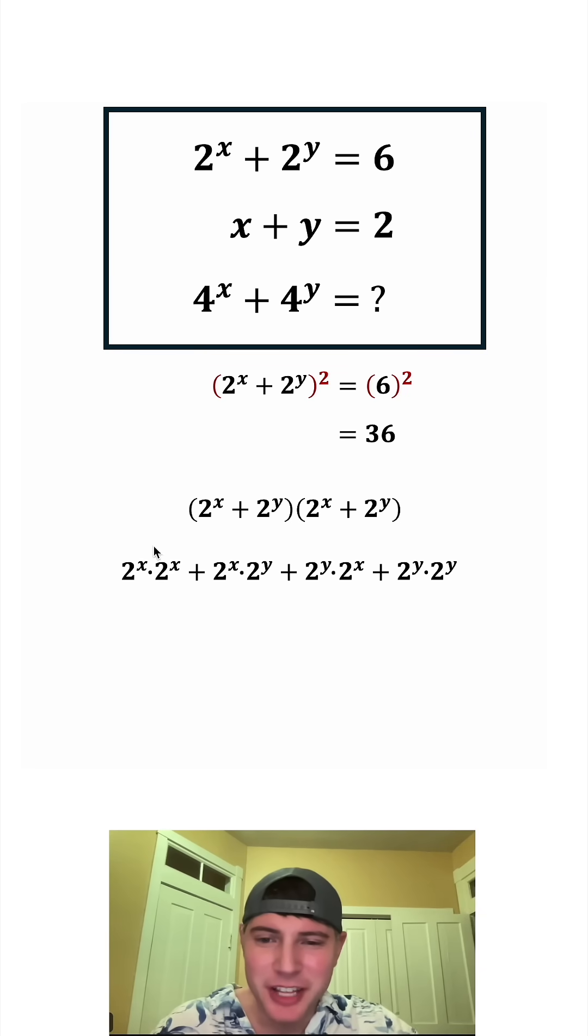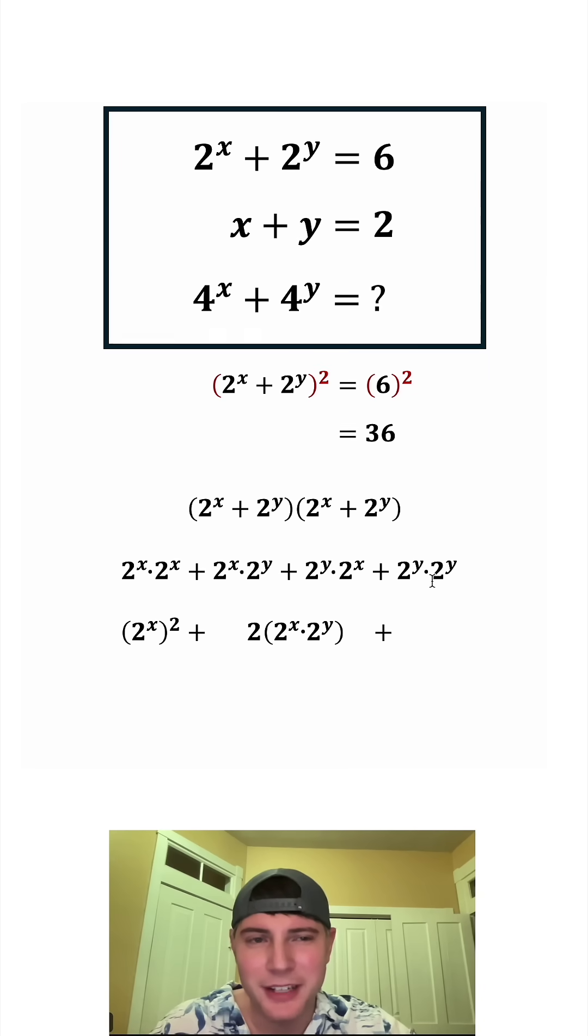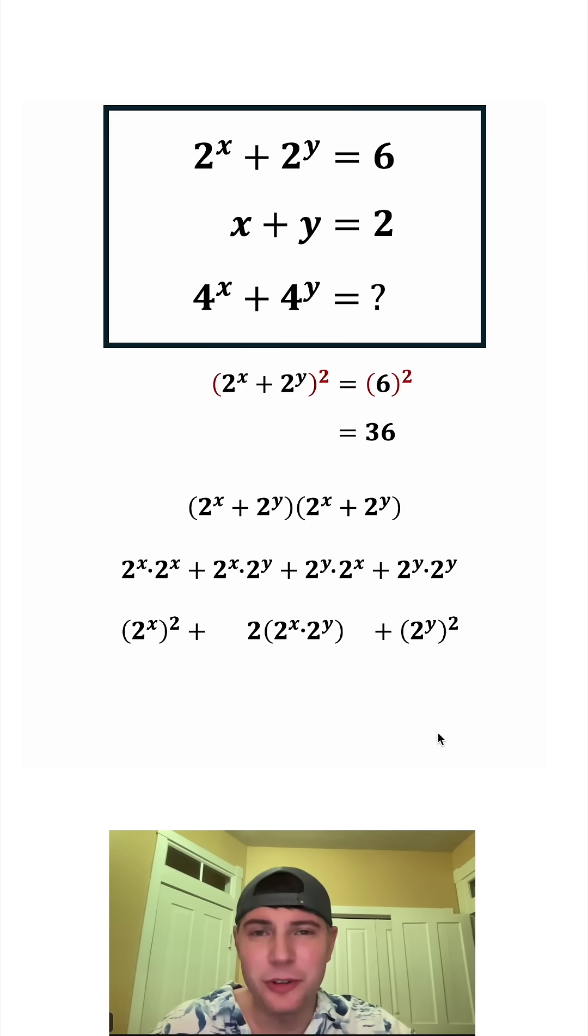For the first term, 2 to the x times 2 to the x, that's 2 to the x squared. For the middle two terms, these are the exact same thing, so we can say we have two of them. And then for the last one, 2 to the y times 2 to the y, that is 2 to the y squared.